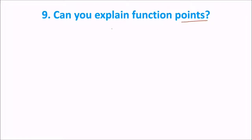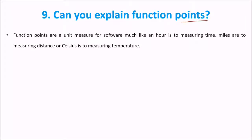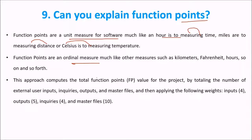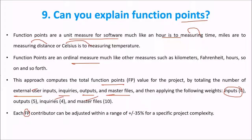Can you explain function points? Function points are a unit measure of software, much like an hour is to measuring time, miles are to measuring distance, and Celsius is to measuring temperature — it's a unit of measurement. Function points are an ordinal measure, much like kilometers, Fahrenheit, or hours. This approach calculates the total function points value for a project by totaling the number of external user interfaces — inputs, EIFs, inquiries, outputs, and master files — and then applying weights. Each function point contributor can adjust within a range of plus or minus 35% for a specific project's complexity.